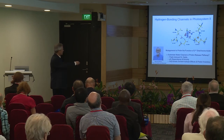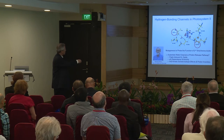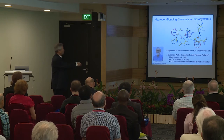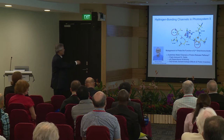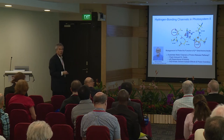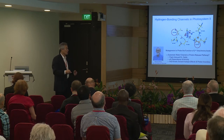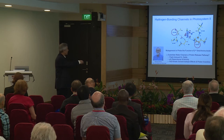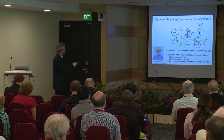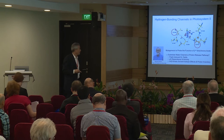Coming back to second shell residues: I'm going to focus on two of them. First, lysine 317, which is near the chloride and also near the pathway we think proton release might be occurring. Second, serine 169 — we're interested in this residue because its side chain is hydrogen bonded to water molecule WX, which is the water that disappears in Shen's structure when you go from the S1 to the S3 state, and which we've suggested may be involved in the carousel mechanism of water moving in. This water is at the narrow channel, believed to be the substrate delivery pathway.